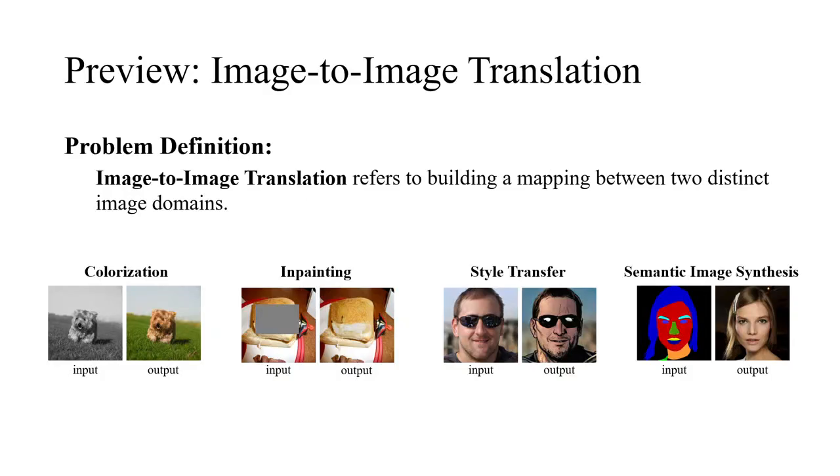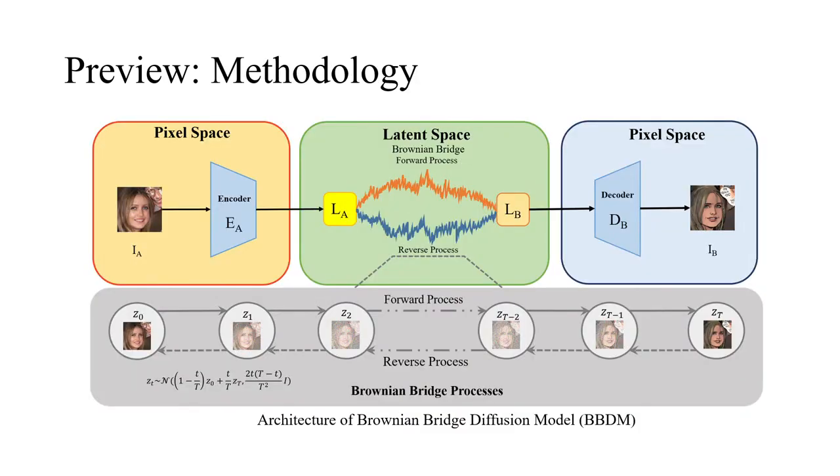Image-to-image translation has long been an important problem in computer vision. In this paper, the proposed method models image-to-image translation as a stochastic Brownian Bridge process, and learns the translation between two domains directly through the bidirectional diffusion process.